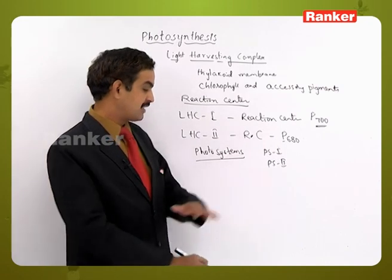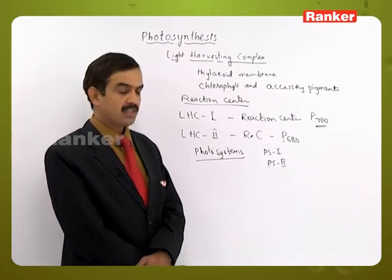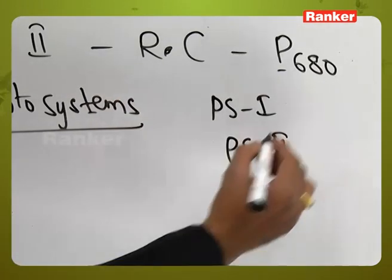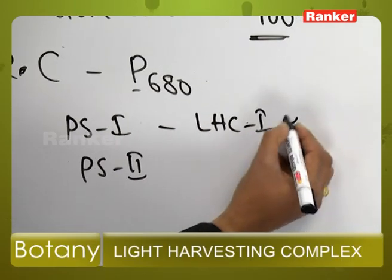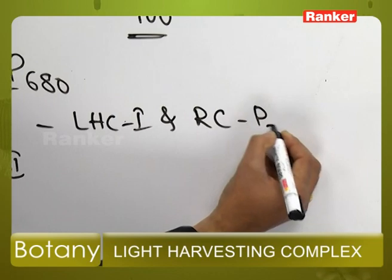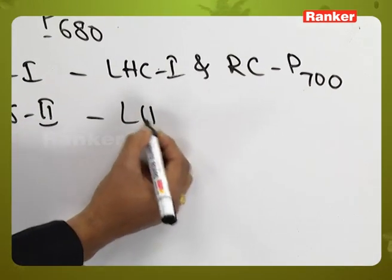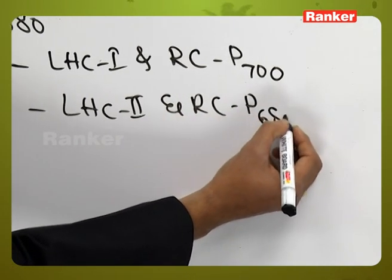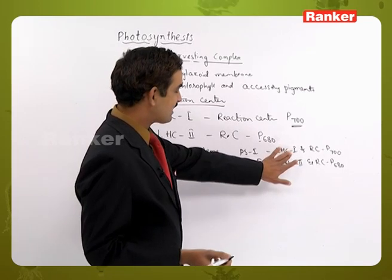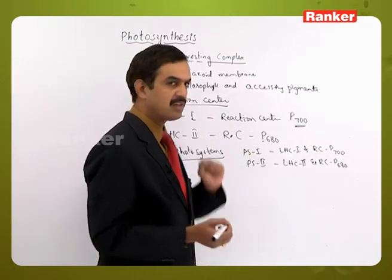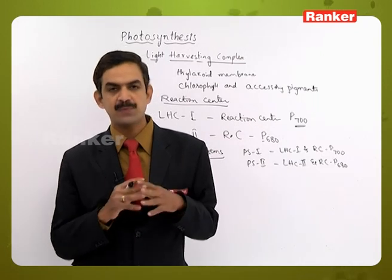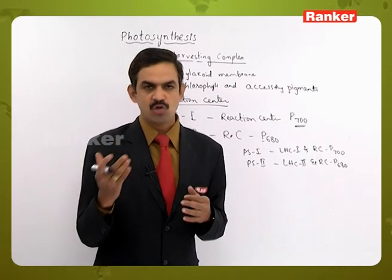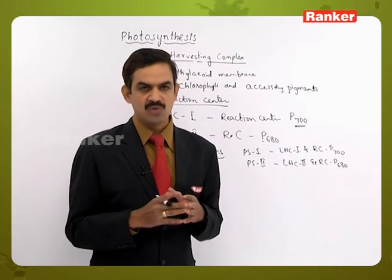Photosystems are protein molecules concerned with the light harvesting complex. Photosystem 1 contains LHC1 and reaction center P700, while PS2 contains light harvesting complex 2 and reaction center P680. The antenna part — the light harvesting complex — and the reaction center are both parts of the photosystems. Two types of photosystems operate in the thylakoid membrane, where the light reaction takes place and the rate of photosynthesis is determined.